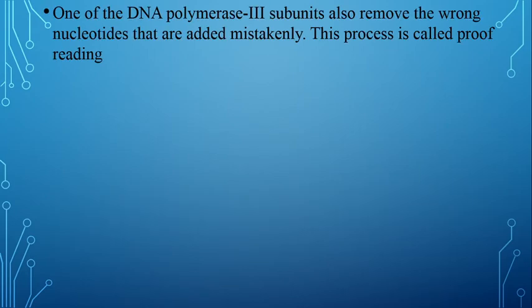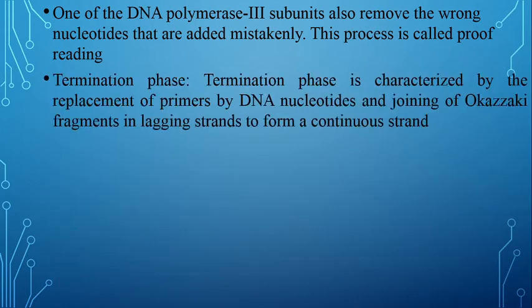One of the DNA Polymerase 3 sub-units also removes the wrongly added nucleotides that are added mistakenly — this is called proof reading. DNA Polymerase 3 ke ek unit proof reading bhi kar raha hota hai; agar koi DNA nucleotide galat add ho gaya, toh isko bhi remove karta hai.